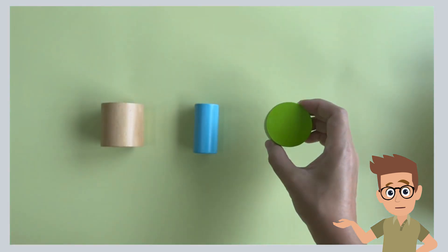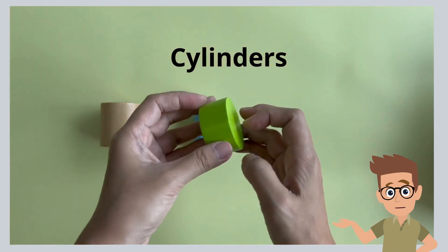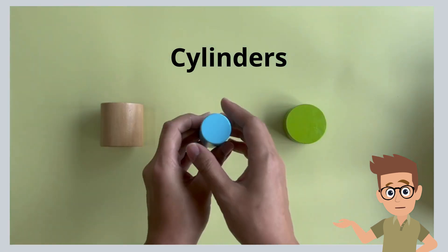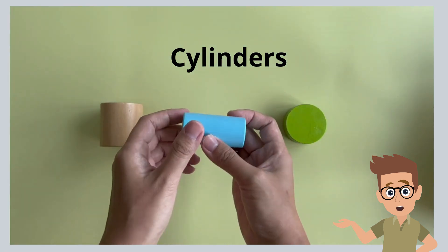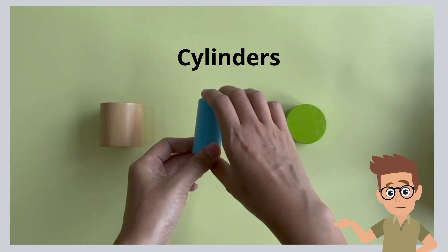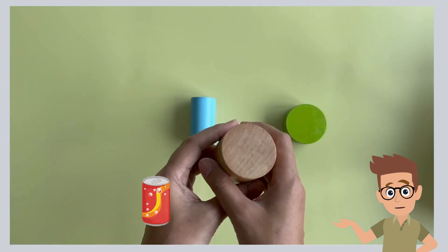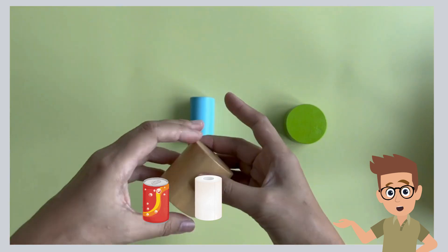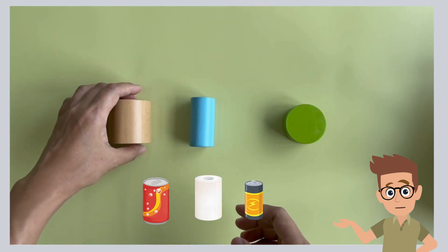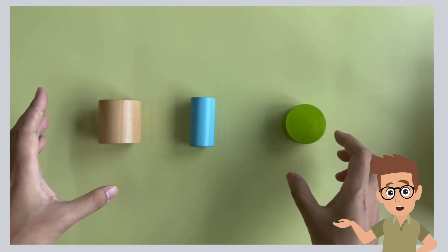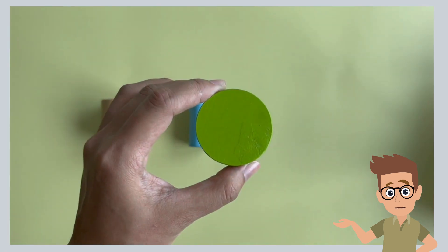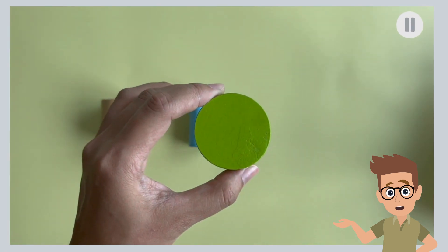Now, let's look at the third group of solids. These are cylinders. What are some examples of cylinders in real life? For example, a drink can, a tissue roll, or a battery. What is the shape of this face of the cylinder? Pause and discuss with your friends. It is in the shape of a circle.